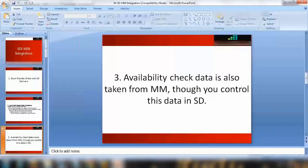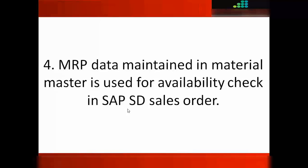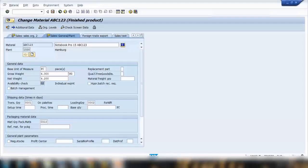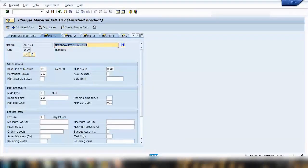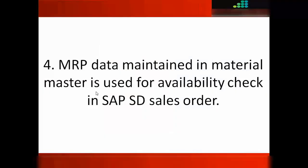That's another integration point between SD and MM. Point number four: MRP data maintained in the material master is used for the availability check in SAP SD sales orders. We maintain MRP 1, 2, 3, and 4 views in the material master, and this data is used during the availability check in SAP SD sales orders. Depending on what MRP type you maintain, the system will use the MRP views data from the material master during the availability check.